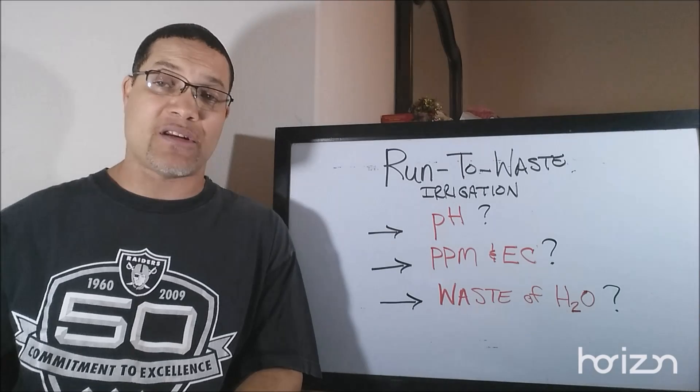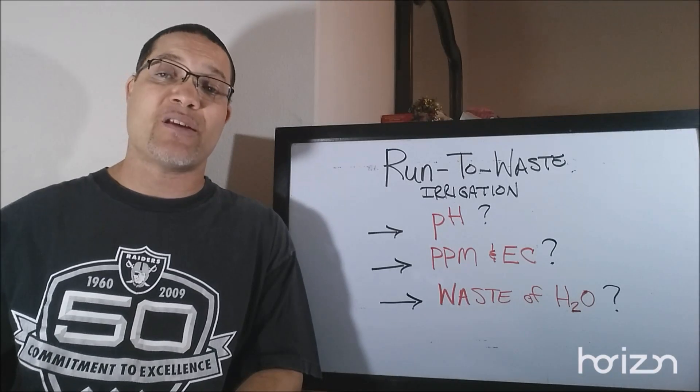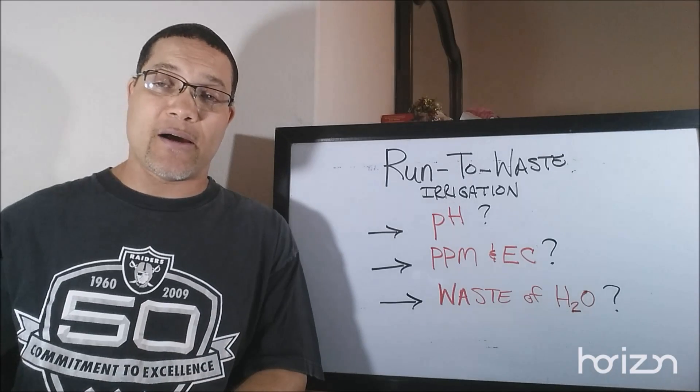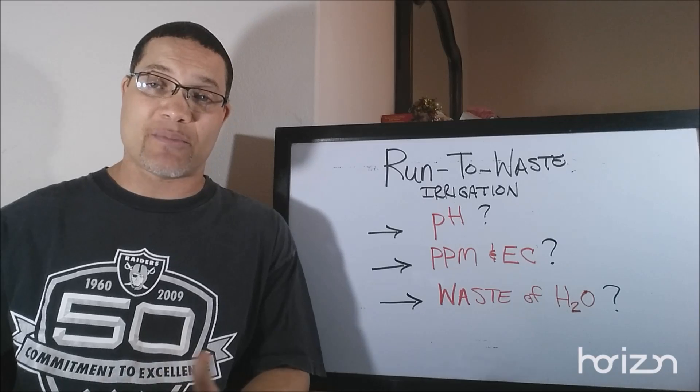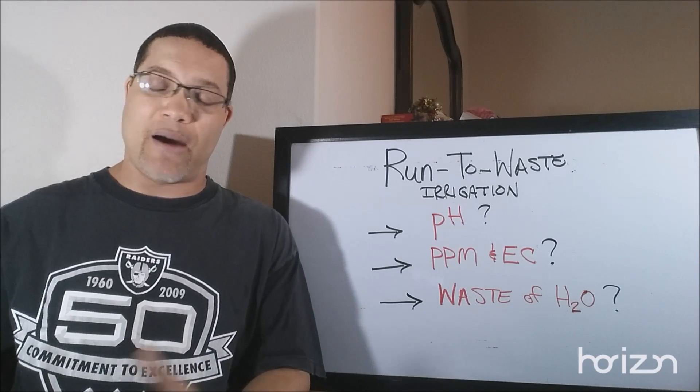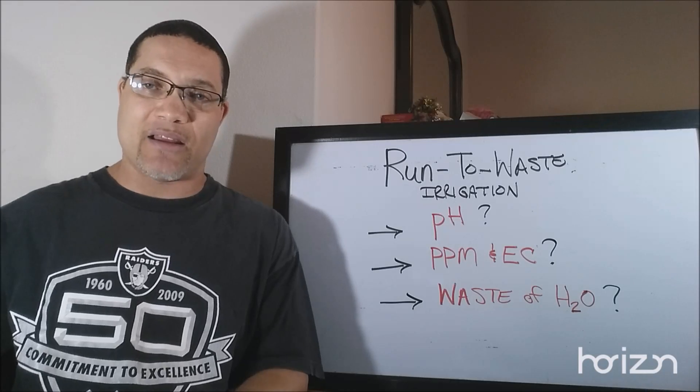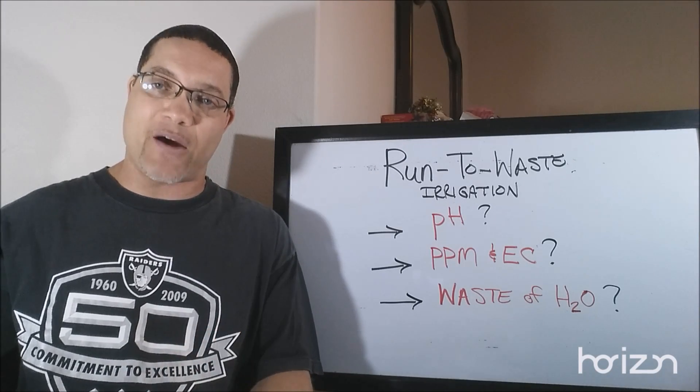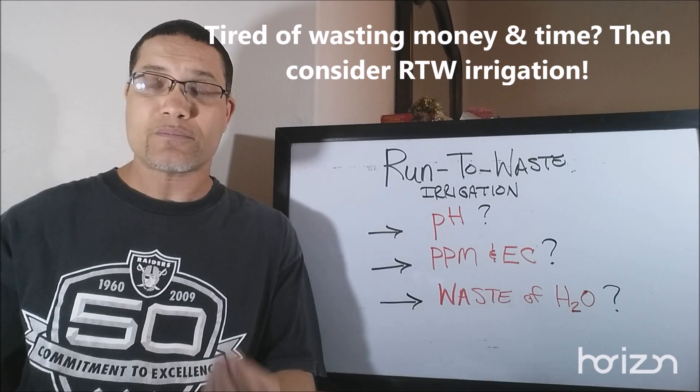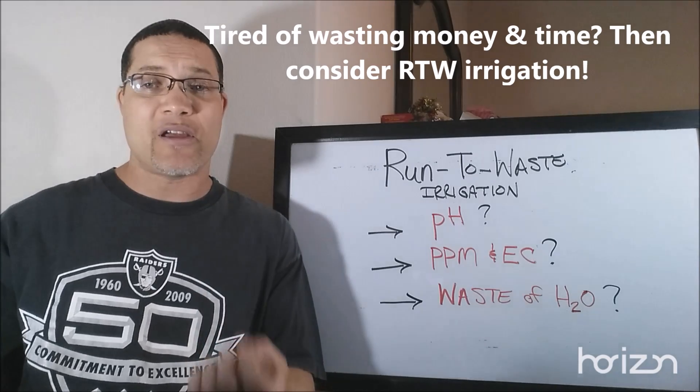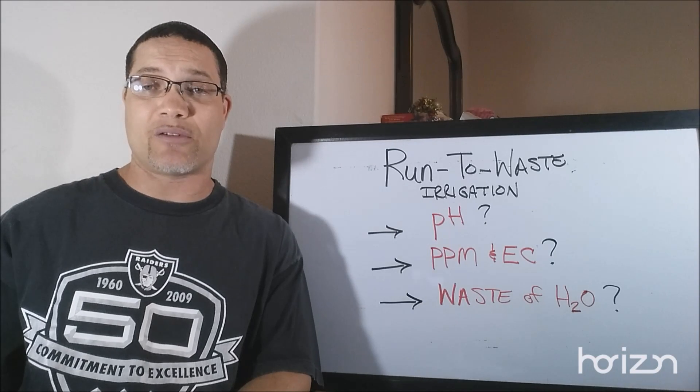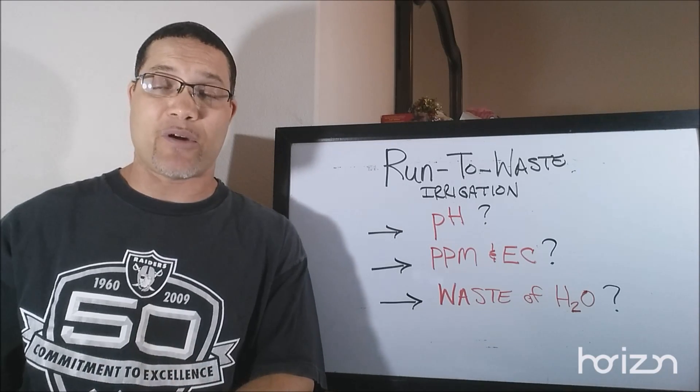I've seen many rookies who could never get recirculating right switch to hand feeding, run-to-waste, or run-to-waste with some kind of drip irrigation, and it eliminated some of the things out of the routine that was causing them failure. So please consider this. They both work, but maybe it's time for you guys that are failing to look for a different alternative, and run-to-waste might be that for you.